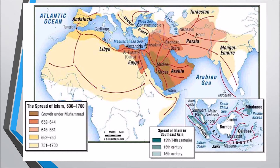The Muslims continued their drive eastward into Central Asia. The clash of Muslim horsemen with a Chinese army at the Talas River in 751 marked the furthest Islamic penetration into Central Asia. From southern Persia, a Muslim force marched into the Indus Valley in northern India, and in 713 founded an Islamic community there.